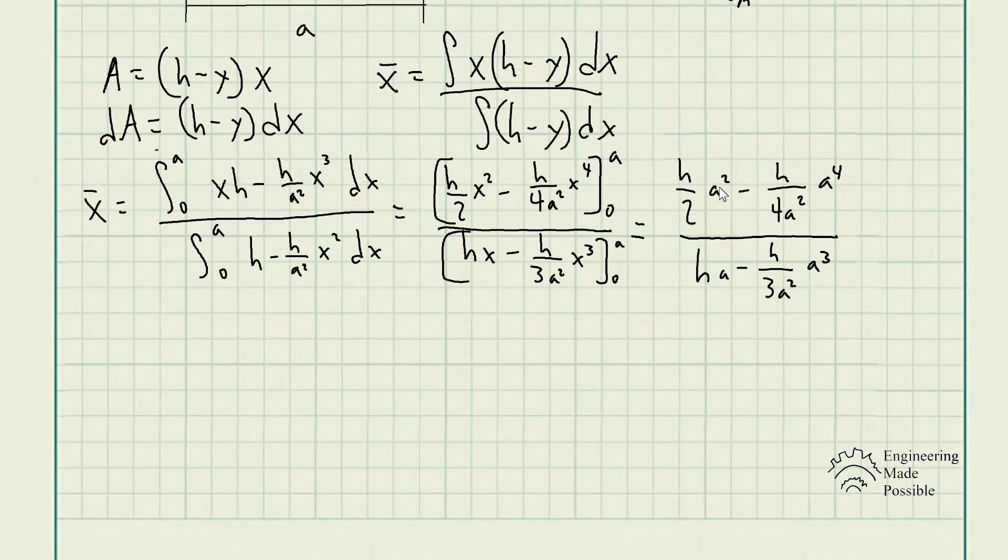So we have h divided by 2a squared take away h divided by 4a squared times a to the power of 4. So we see that a squared cancels, and we're left with a squared here. Now for the denominator, we have h times a take away h divided by 3a squared times a cubed. So this cancels, and we're left with 1a. Now we can keep on simplifying this until we finally get our answer.